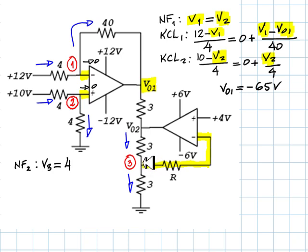Now we write a KCL equation for this node 3. Currents going in: V02 minus V3 over 3 ohms equals the currents leaving the node, 0 amps plus V3 over 3. And the solution, V02, is 8 volts.